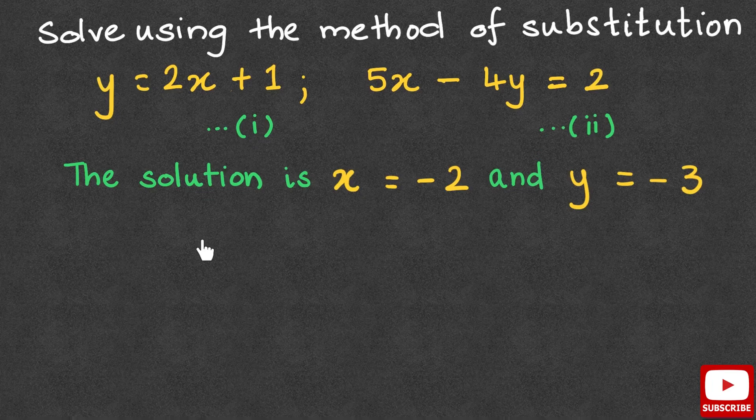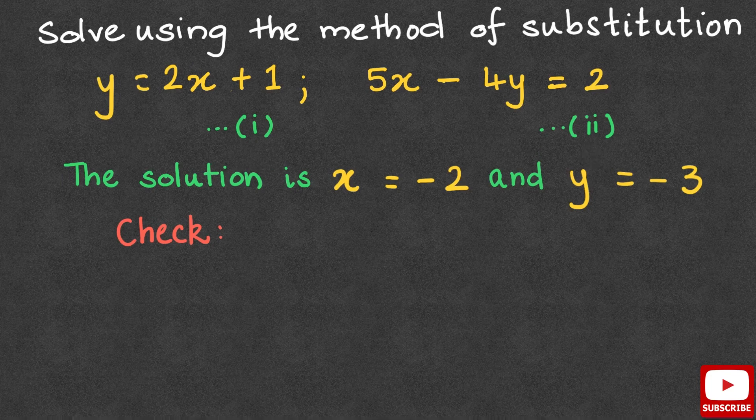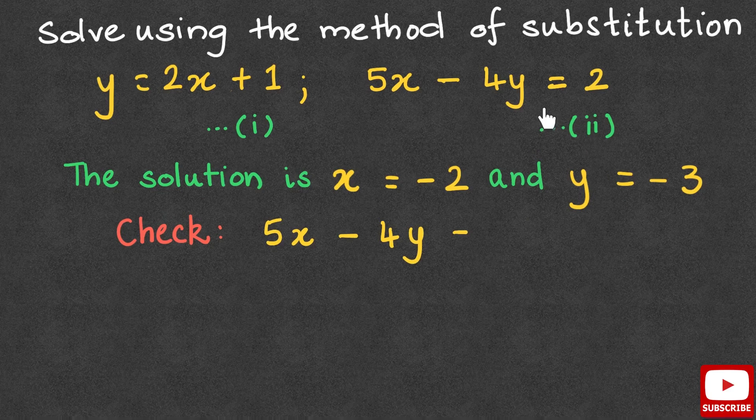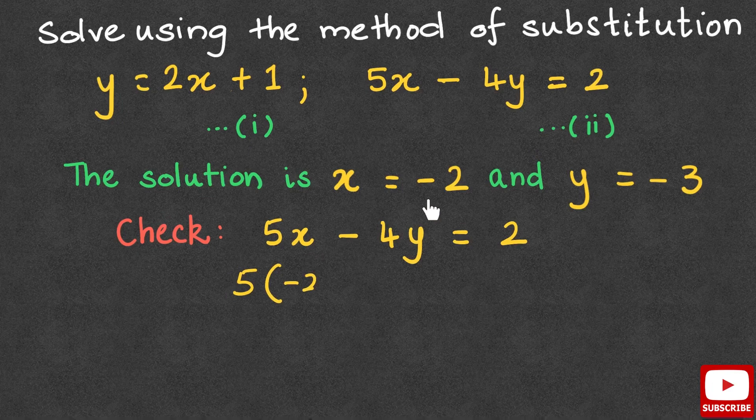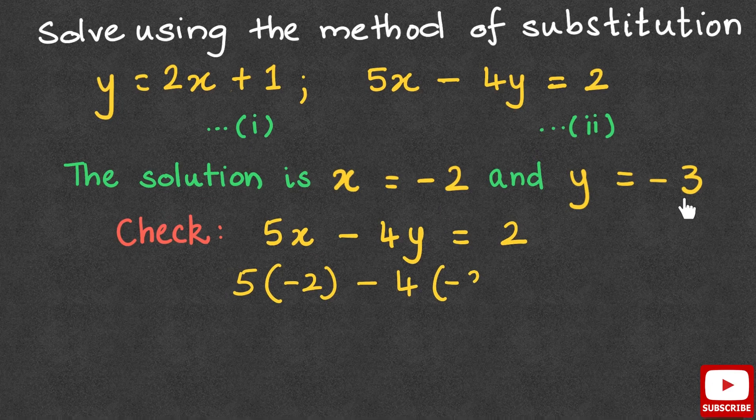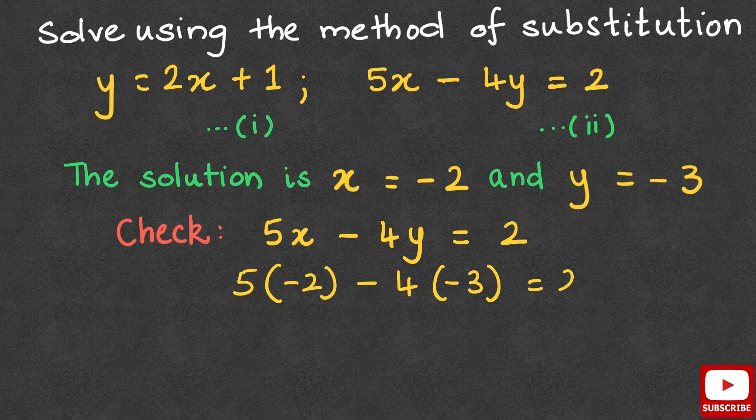Finally, to check if our solution is correct, we substitute the values of x and y in either of the two equations. So let's say we substitute the values in equation 2. So we have 5x minus 4y equals 2. 5 instead of x, we write negative 2, minus 4 instead of y, we write negative 3, that is equal to 2.